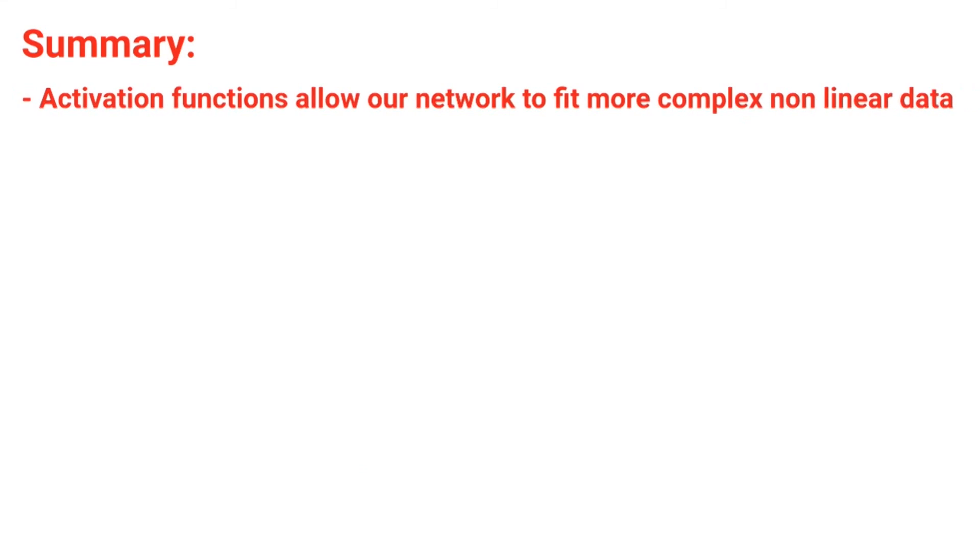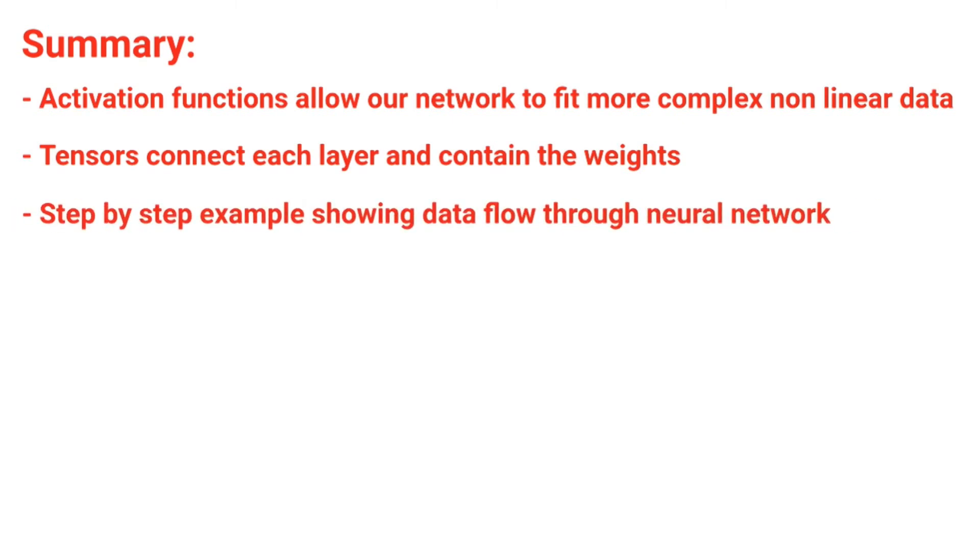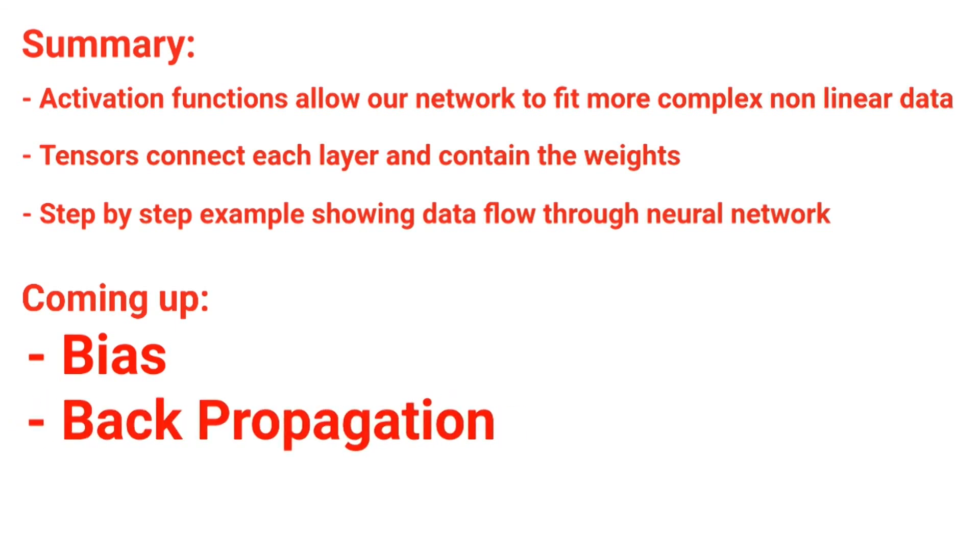Just to wrap things up, let's review what we learned. Remember, we learned activation functions allow our network to fit more complex, non-linear data. We also learned that tensors are what connects each layer, and each tensor contains its own set of weights. We also took a look at step-by-step examples showing exactly how data flows through a neural network. Coming up next, we're going to talk about bias, and we'll take a look at how that plays into neural networks. I'm also going to have a video coming up talking about backpropagation and what that is. And lastly, for those of you interested in the code, there will be videos coming up where we go through coding a neural network in TensorFlow. So a lot to look forward to. Please don't forget to subscribe, and thanks for watching.